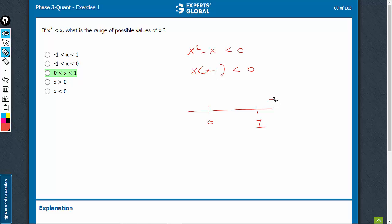The rightmost value is always positive. So positive, negative, positive. We need the negative values. So x has to be between 0 and 1.